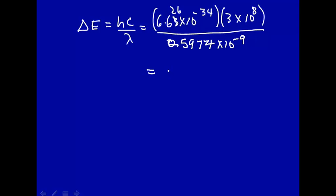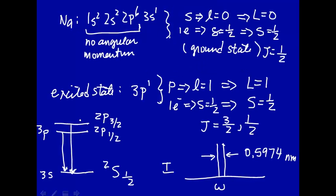This energy separation comes out to be 3.327×10⁻¹⁶ joule. So that's the energy level separation between here and here, which in wavelength, in nanometers, is not very much.